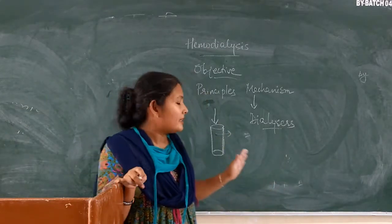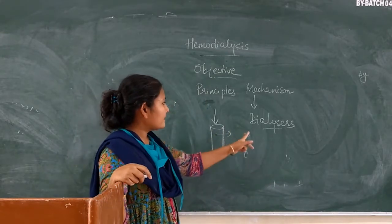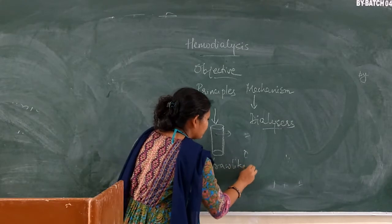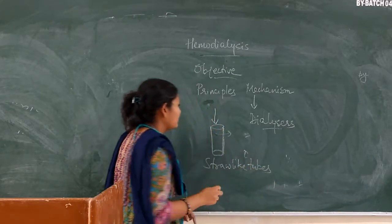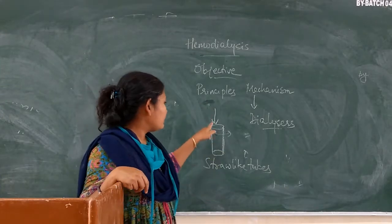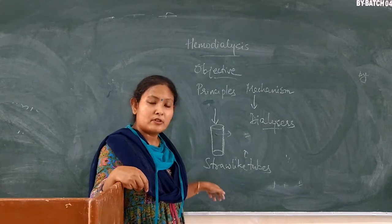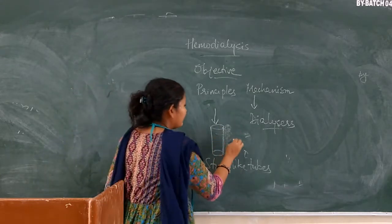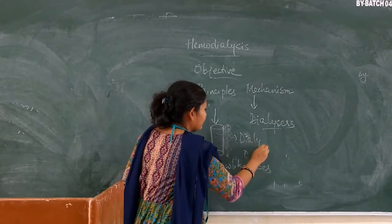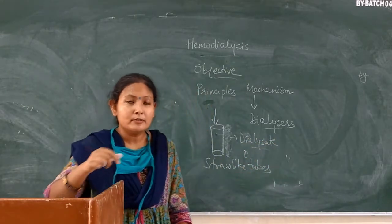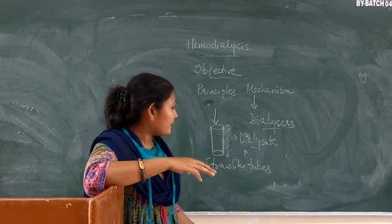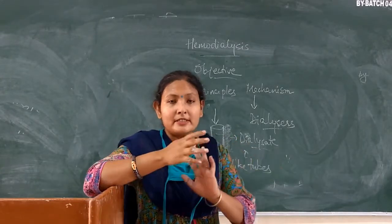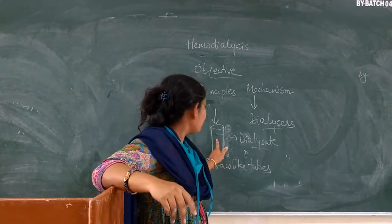Inside the dialyzer — the artificial kidney — many straw-like tubes are present. Blood flows inside these straw-like tubes. Surrounding the tubes is dialysate. Dialysate is a fluid which helps in removing the waste products from the body, because the solution can be concentrated in this process, so the toxins come out.